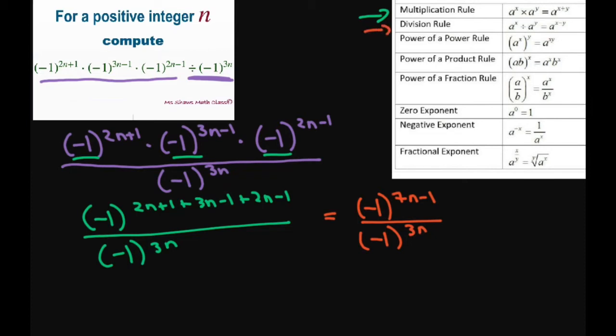Using my division rule, since these are the same base, I can write this as (-1)^(7n-1-3n), which gives me (-1)^(4n-1).